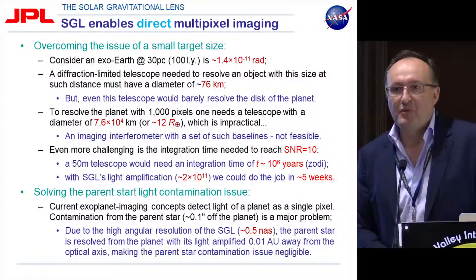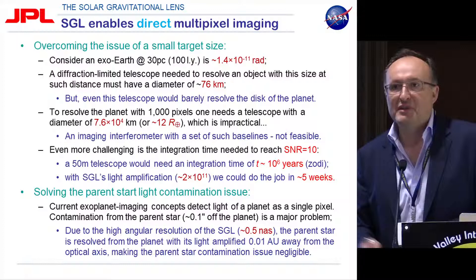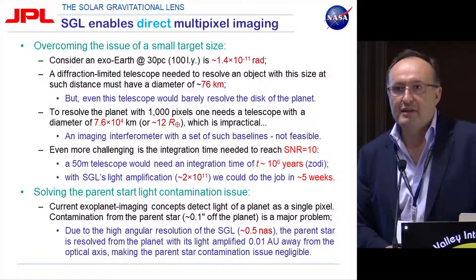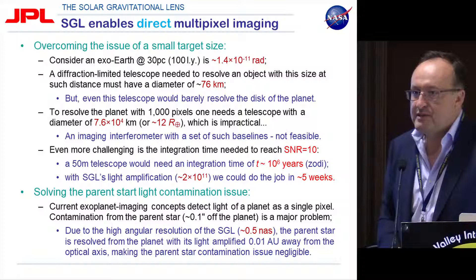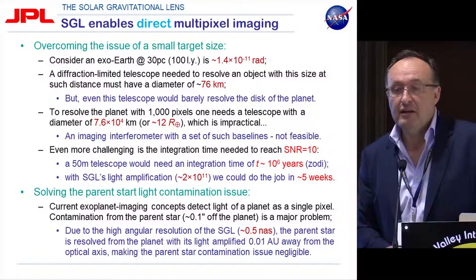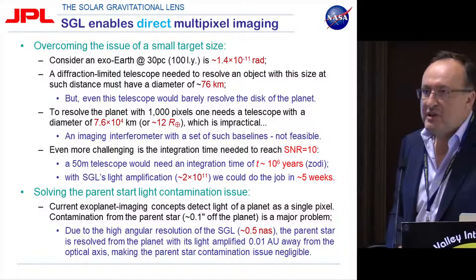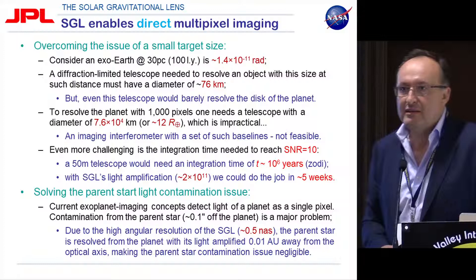To resolve an object with 1,000 pixels, you would need an interferometer with a very large baseline. The interferometric baselines we're talking about span distances from roughly 10 meters all the way to 12 Earth radii — just unfeasible. Even more challenging is the signal-to-noise ratio. We are dealing with zodiacal light and many other issues. A 50-meter space telescope would take roughly a million years to build a signal-to-noise ratio of about SNR = 10, which is quite a sobering conclusion.